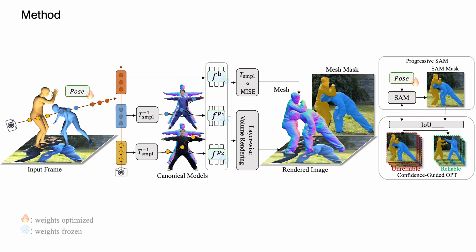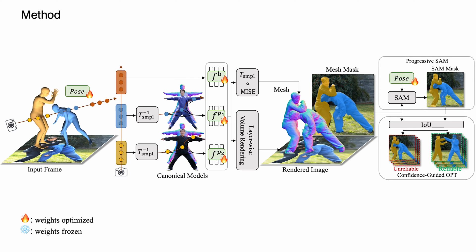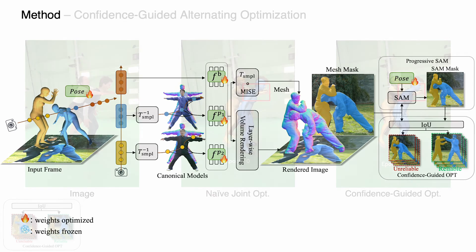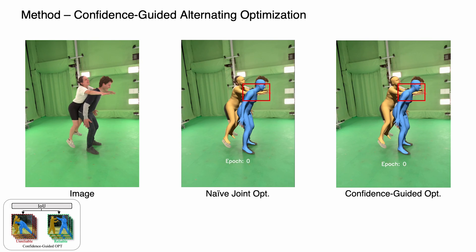Specifically, for unreliable frames we only optimize the human pose parameters. For reliable frames, we jointly optimize the poses together with the shape-field parameters. Our confidence-guided alternating optimization is effective in correcting inaccurate pose initialization and producing physically plausible human poses.